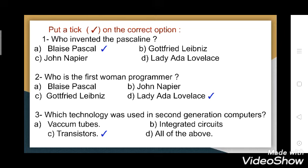Second question: who is the first woman programmer? The options are: A) Blaise Pascal, B) John Napier, C) Gottfried Leibniz, D) Lady Ada Lovelace. The answer is Lady Ada Lovelace — she was the first woman programmer.